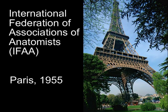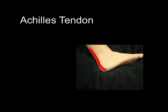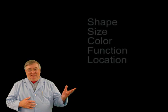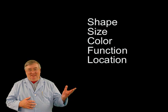An international nomenclature was adopted for anatomy in Paris in 1955. It does not use the names of people for any structures, with the single exception of the Achilles tendon at the back of the foot and ankle. Names are chosen to identify structures according to shape, size, color, function, and/or location.